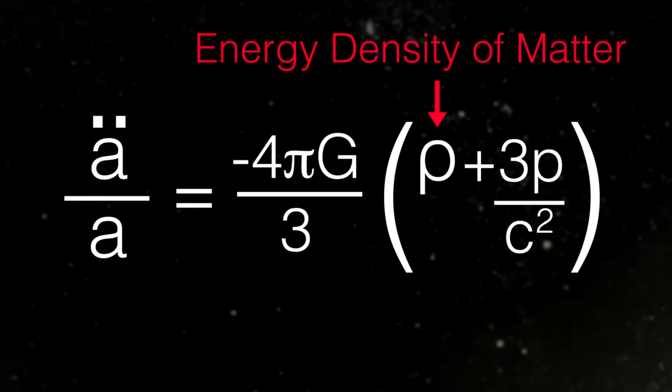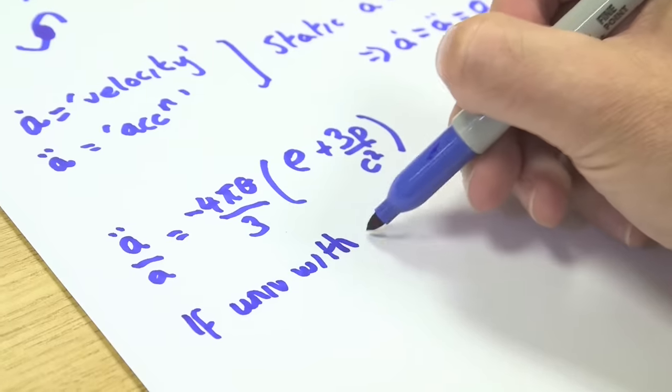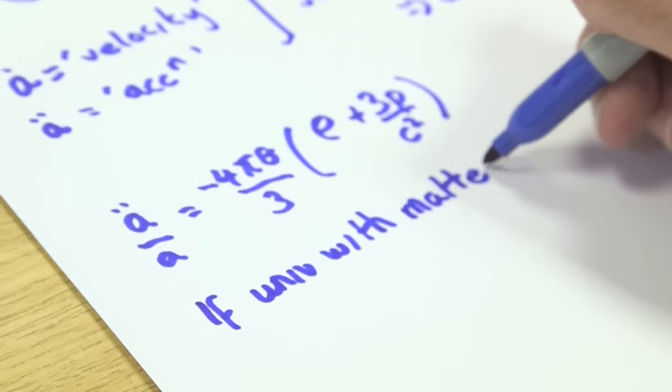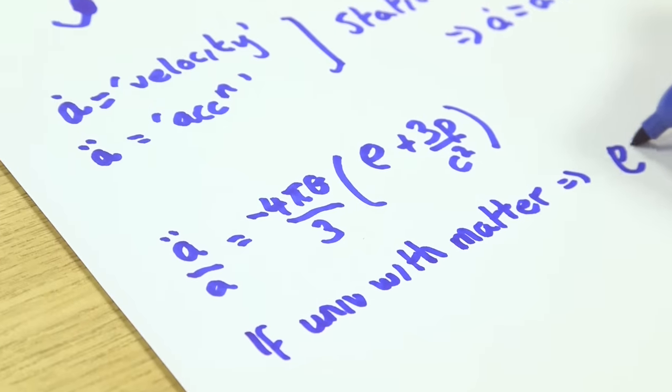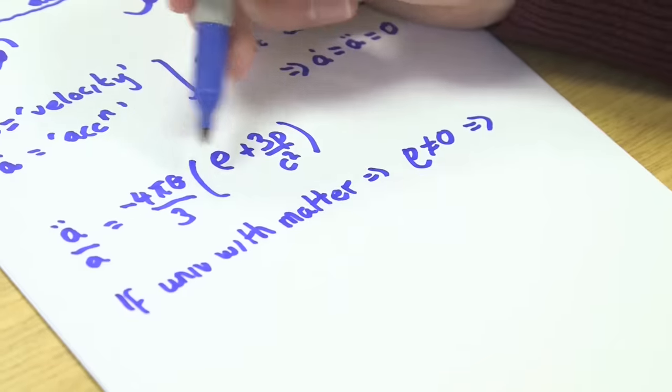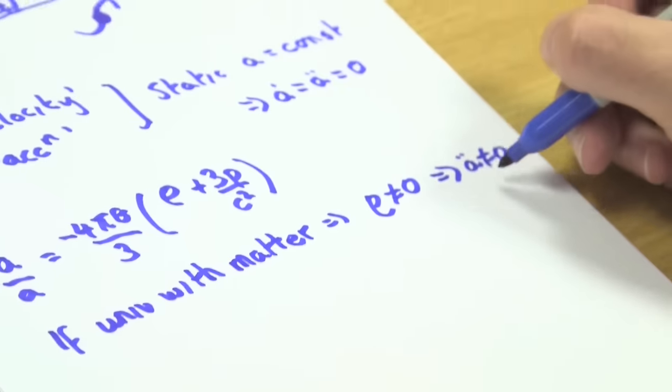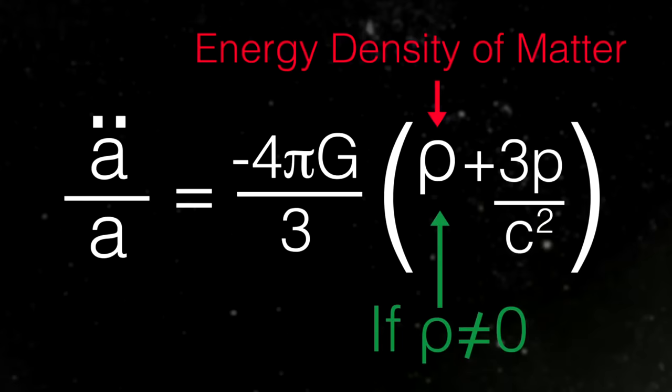P is the pressure of that matter. For a universe made up of particles like you and I that are not moving very rapidly, the pressure is effectively zero. But the key thing is rho is non-zero. If I have a universe with matter, then rho is not equal to zero, which immediately tells me the right hand side is non-zero. So a double dot is not equal to zero. Einstein's had it. The universe is going to evolve.